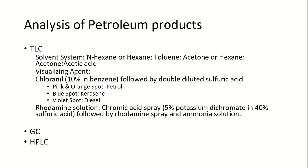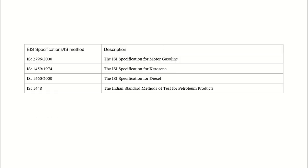Other instruments that can be used are GC and HPLC. GC is mostly preferable for petroleum products as they are volatile in nature. The BIS specifications for petroleum products are IS 2796:2000 for motor gasoline, IS 1459:1974 for kerosene, IS 1460:2000 for diesel, and IS 1448 for testing of petroleum products.